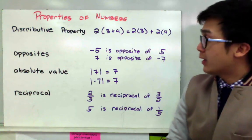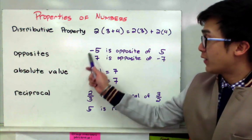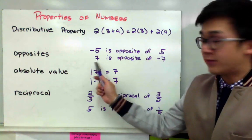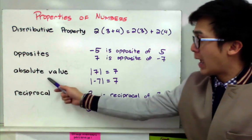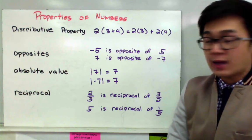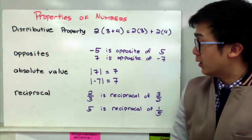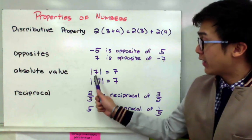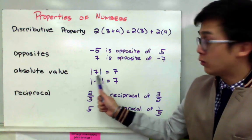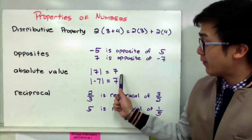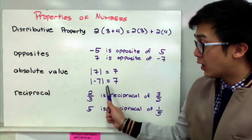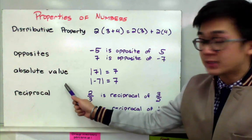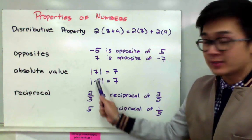Now opposites is pretty basic — you just need to think of a number that is opposite to the given number. So if I have negative five, its opposite number will be positive five; and if I'm given seven, the opposite of seven is negative seven. For absolute value, it is defined as the distance of a number from zero — that's why it's always going to be positive. So the absolute value of seven is seven units from zero, and the absolute value of negative seven is still seven, because distance is always positive.